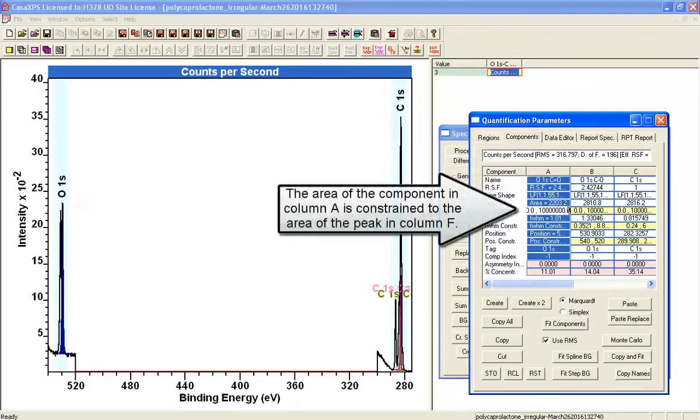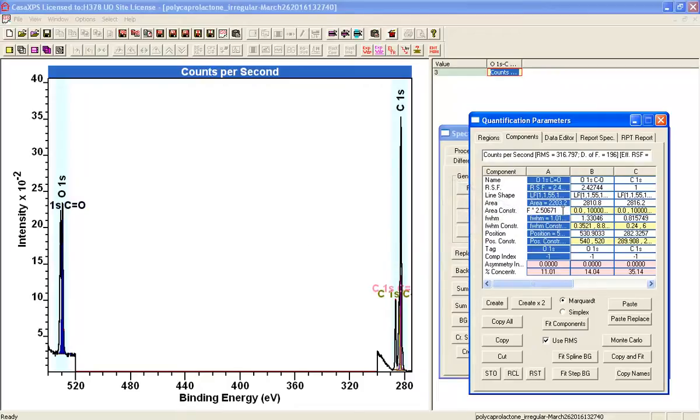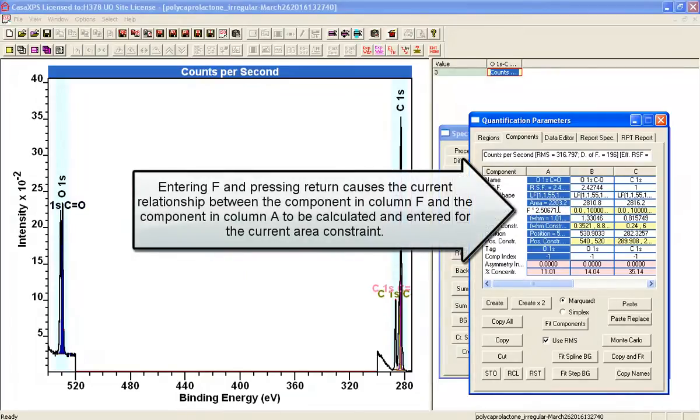If I now go in here and let's see how the parameter relates. If I type in F and press return, I get a value and the value has turned out to be 2.5.